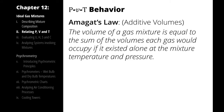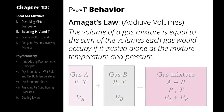The other modeling method assumes that each of the substances is at the same pressure but only takes up part of the volume. That's called Amagat's law. Amagat's law assumes that each of the species in the mixture contributes part of the volume but exists at the mixture pressure.